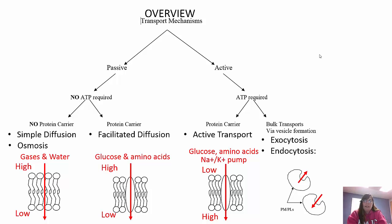Osmosis is the movement of water through the bilayer. Facilitated diffusion is when a protein carrier is necessary - it either goes through a channel protein or a carrier protein. Glucose and amino acids have to do that. It goes from high concentration to low concentration, meaning glucose is more concentrated on the outside of the cell than the inside, so it goes from where it's highly concentrated to where it's not.